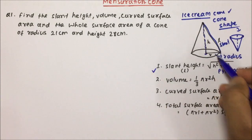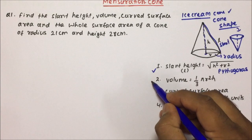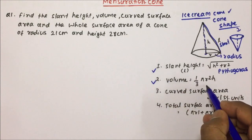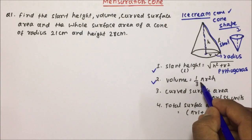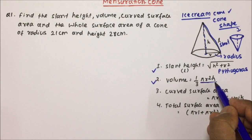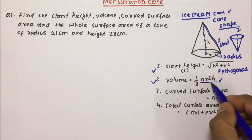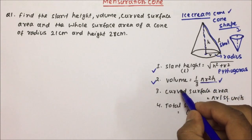So slant height will be nothing but the square root of h squared plus r squared. Volume will be 1/3 πr²h. If you remember the cylinder volume, cylinder volume was πr²h, so the cone volume is one-third of that — you can remember it that way.